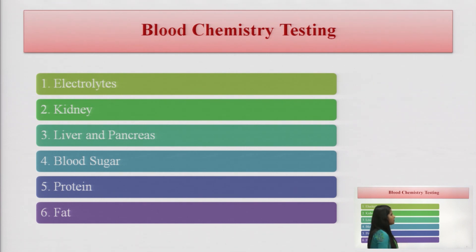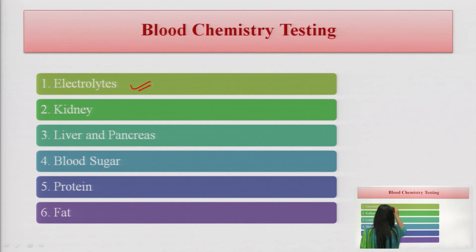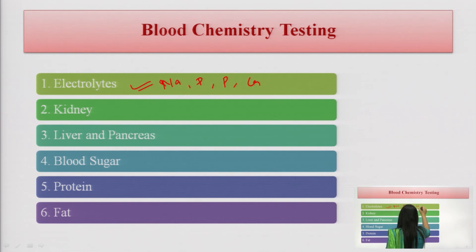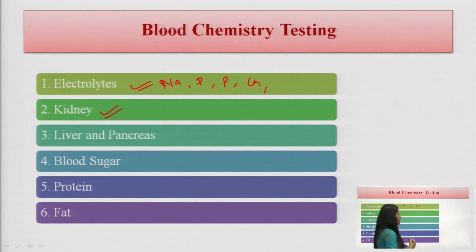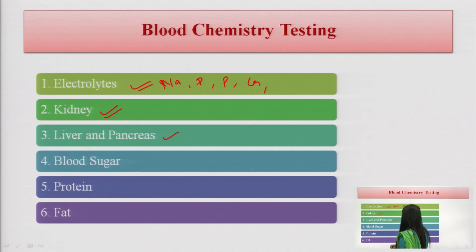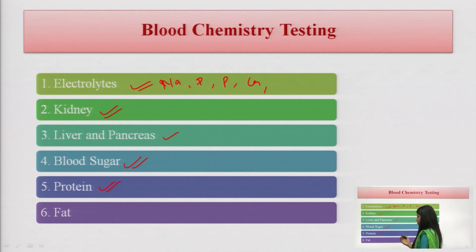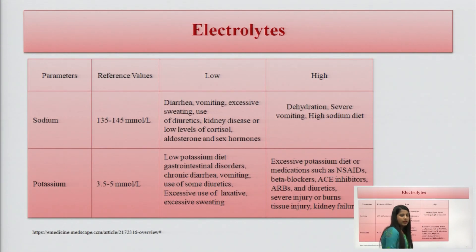Now we will discuss blood chemistry tests. In blood chemistry tests, the basic tests include: electrolytes — sodium, potassium, phosphate, calcium levels — kidney assessment tests, liver and pancreas tests, blood sugar, protein assessment, and fat levels. These all are covered in blood chemistry testing. First, let's cover electrolyte levels: sodium, potassium, calcium, chloride, and phosphate.